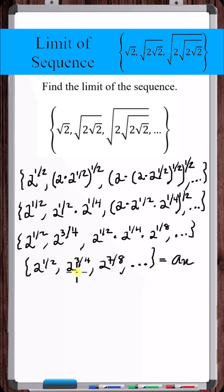So this is our a sub n. Let's derive the formula for the a sub n based on the pattern we see. The a sub n for this sequence is...